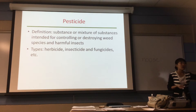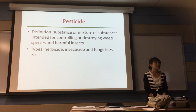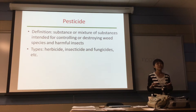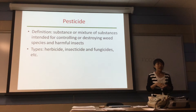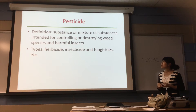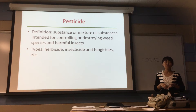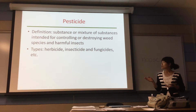I want to go quickly over the definition of pesticide. A pesticide is a substance, or a mixture of some substances. It is designed to control and destroy weed species and harmful insects that can destroy the crop. The pesticides are classified according to the target organism. For example, herbicides — this is a type of chemical used to control and kill weeds. And insecticides, of course, to kill harmful insects. And fungicides, to kill the fungi.